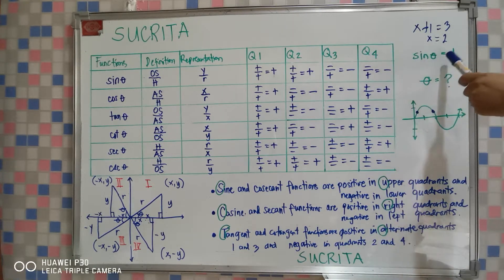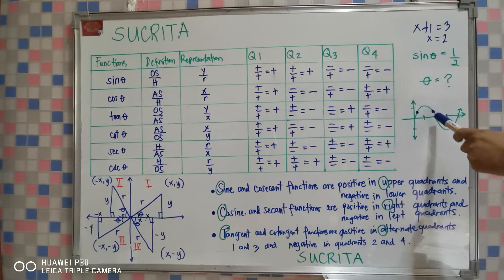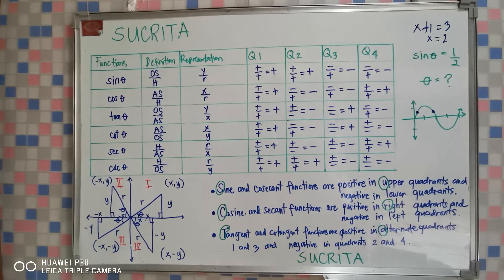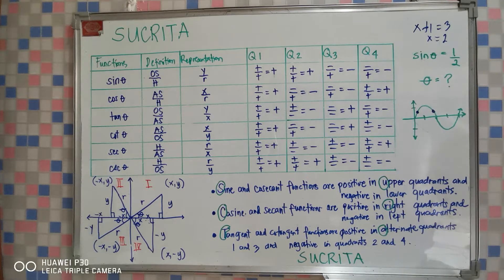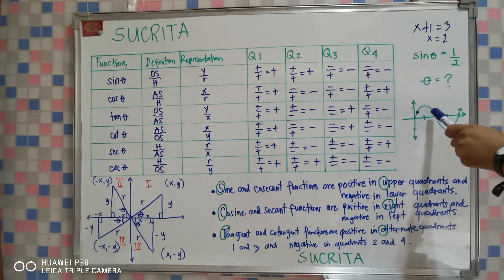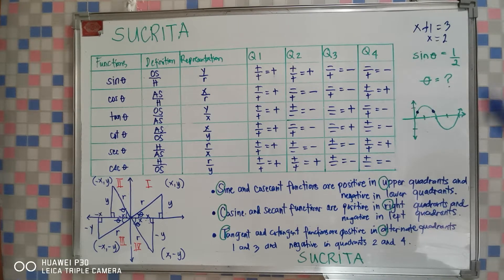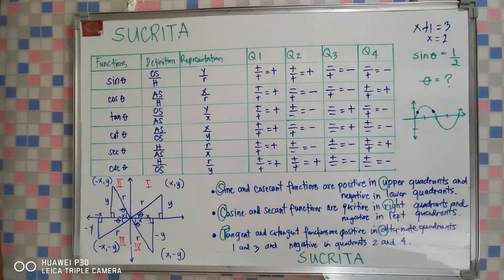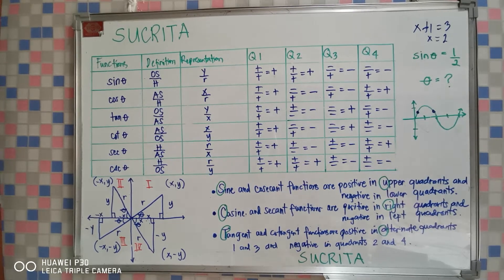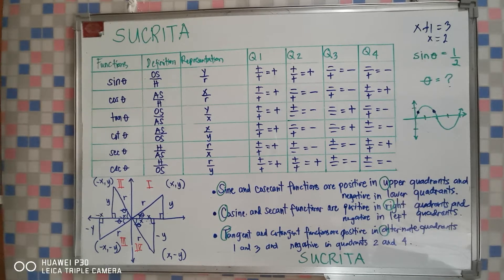Let's go back to sin θ = 1/2. If you recall your graphs of trigonometric functions, this is the curve of the sine function. Where can you locate 1/2? So 1/2 is somewhere here and here. Notice that sin θ = 1/2 has two possible answers — two possible angle measures. It's found in quadrant 1 and quadrant 2. We will determine the value of angle theta when we proceed with trigonometric equations, but first let me discuss Sukrita as a prerequisite.